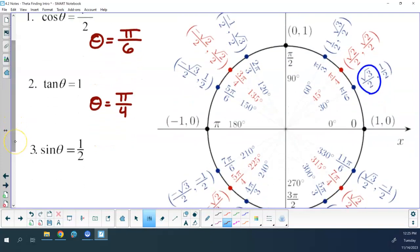Looking only at quadrant number 1, where is my sine value positive 1 half? Pi over 6 again. Now I'm looking for the y value, so that would be at there, which again is pi over 6.